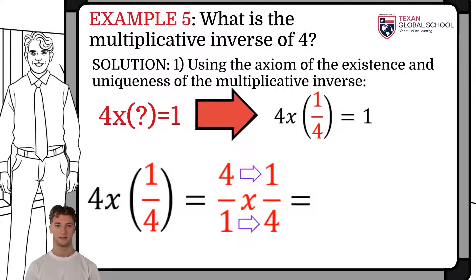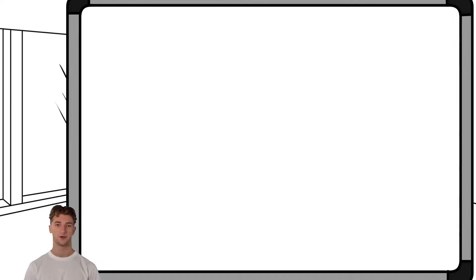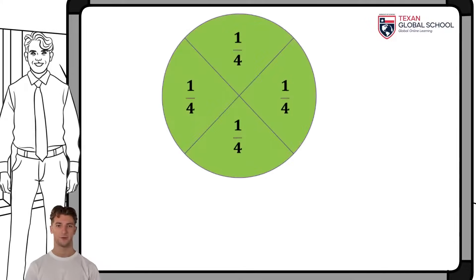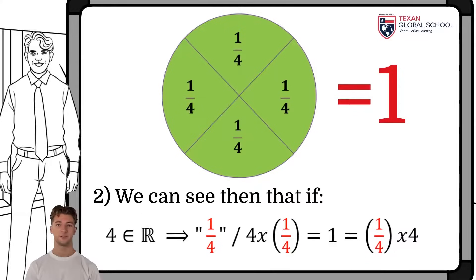Remember that to multiply two fractions, we multiply directly. So it is four times one in the numerator and one times four in the denominator, resulting in four quarters, which when simplified results in one. The diagram shows a circle separated into four parts — each part is a quarter or one-fourth. If we add the four quarters, we get one whole. This axiom is the basis of division; what we actually do is multiply by the multiplicative inverse of a number.